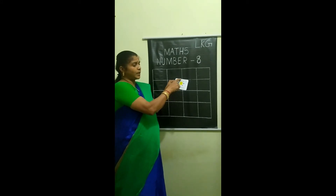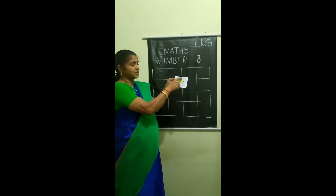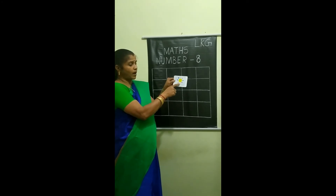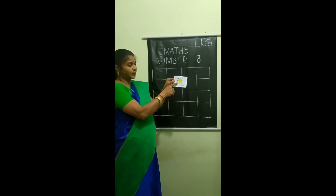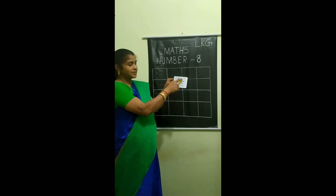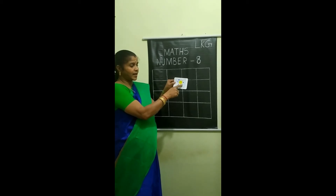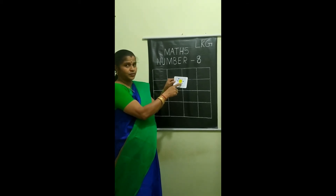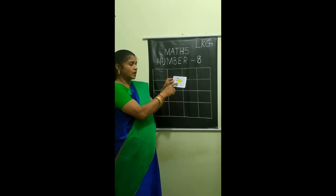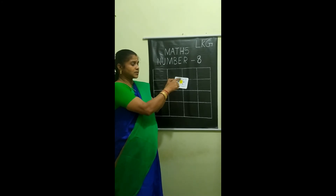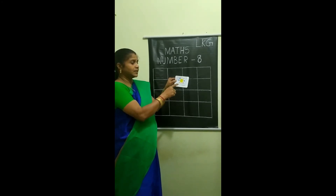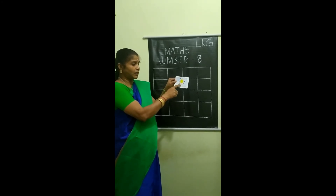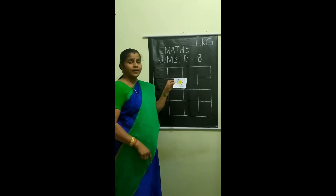How many planets are in our solar system? Let's count: 1, 2, 3, 4, 5, 6, 7, 8. Understood children? There are 8 planets in our solar system.